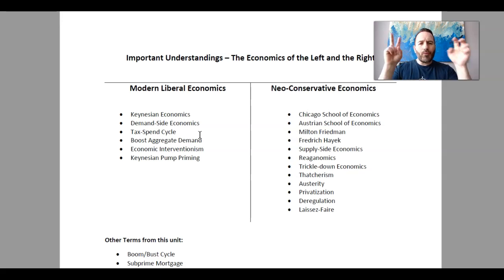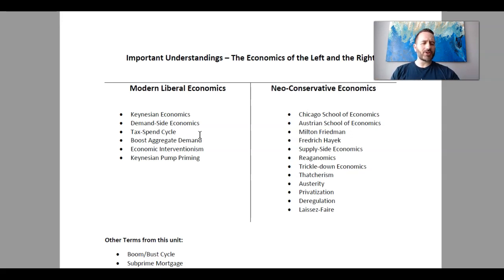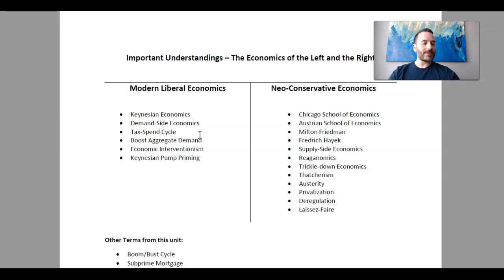Keynes says what we must do is prime the pump of the economy, and we do that by boosting aggregate demand. We boost demand in society by very calculated steps: lowering interest rates, lowering taxes, and spending on infrastructure job creation programs — things like the New Deal, or Canada's Economic Action Plan, or the CERB that we're seeing right now. These are all examples of the government attempting to boost aggregate demand.